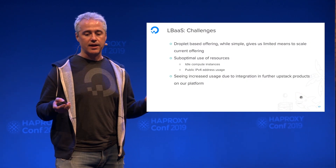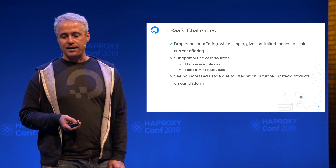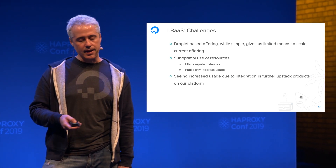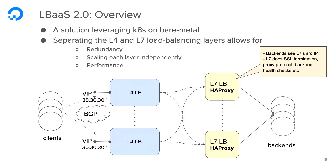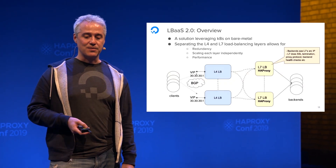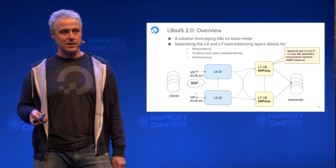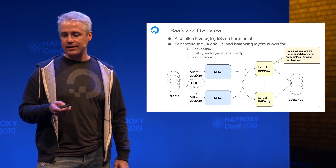The product is seeing increased usage due to integration with further upstream service products on our platform. The next evolution of Load Balancer — without belaboring the architecture since software load balancers have been covered in numerous sessions — will look very typical: equal-cost multi-pathing into multiple Layer 4 load balancers to evenly spread across HAProxy instances into our backend. This gives us the redundancy necessary, allows us to horizontally scale, and gives us the performance to satisfy customers and upstream products demanding higher scale.